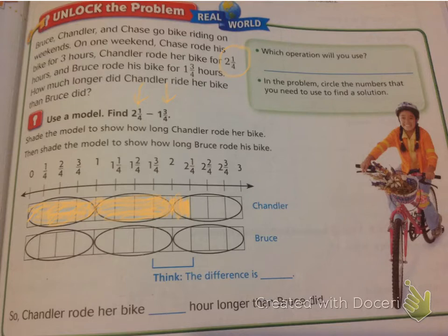Now it says, then shade the model to show how long Bruce rode his bike. Well, he rode his bike 1 3/4 hours. So let's shade in one, and then 3/4. One and 3/4 is right here.